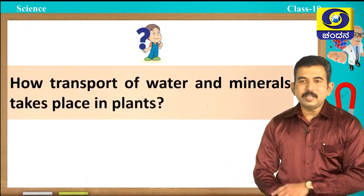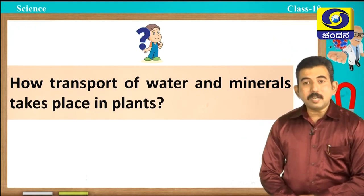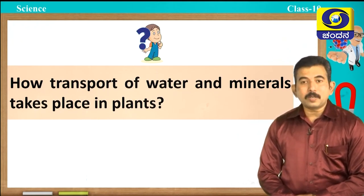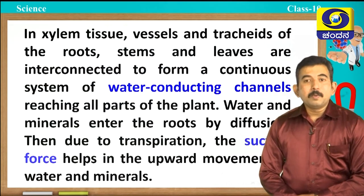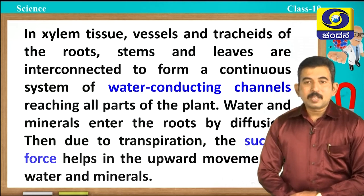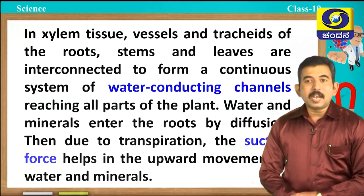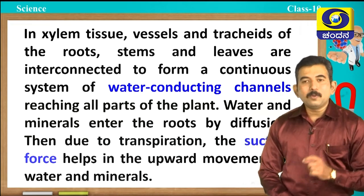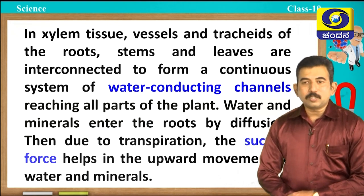How does transport of water and minerals take place in plants? Xylem tissue plays a very important role. Vessels and tracheids of roots, stems, and leaves are interconnected to form a continuous system of water-conducting channels reaching all parts of the plant. Water and minerals enter the roots by diffusion. Then, due to transpiration, the suction force helps in the upward movement of water and minerals.